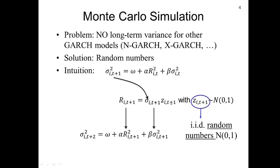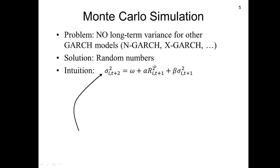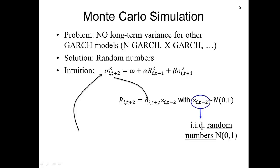We include those 1,000 random numbers in the formula to generate 1,000 returns. These 1,000 returns with sigma for t+1 go back into the GARCH(1,1) formula to obtain sigma for t+2. Then sigma for t+2 is a function of those 1,000 returns and sigma t+1. We generate again 1,000 random numbers z(i, t+2), multiply them to obtain returns for day t+2, include these in the GARCH formula to obtain sigma t+3, and continue doing this up to horizon k.